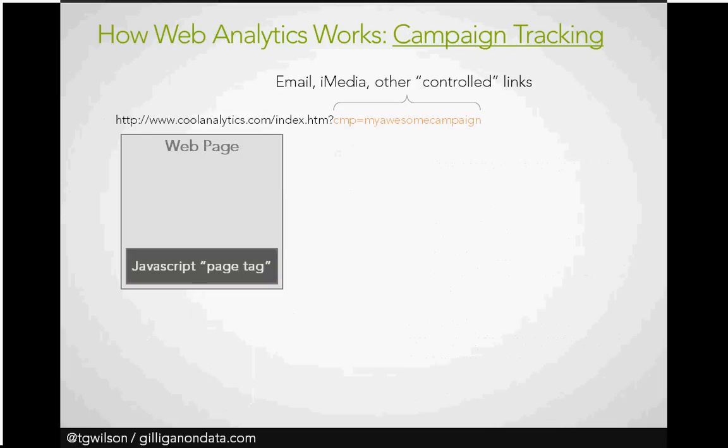But what if you're actually controlling where you're sending people to the site? You're sending a link in an email to your site, you've got a banner ad, or you're running something on a partner's website. If you can control what link is sending traffic to that page, you can stick an added parameter on the end of the URL. Notice we've just added a question mark and put a key-value pair: CMP is the key, and MyAwesomeCampaign is the value. The specific syntax varies based on the tool and how you've configured it. The web page reads that and says, I have no idea what that is, so I'm just going to deliver this plain old index.htm.